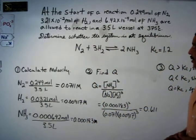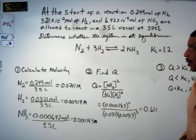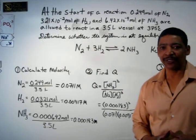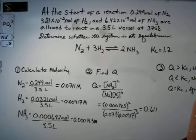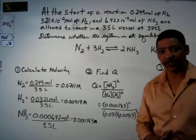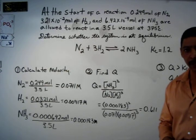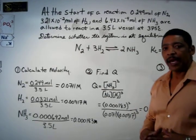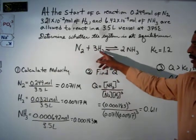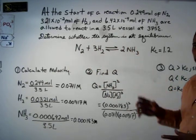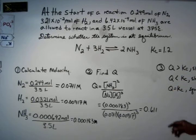At the start of a reaction, 0.249 mol of nitrogen gas and 3.21 times 10 to the minus 2 mol of hydrogen gas and 6.42 times 10 to the minus 4 mol of ammonia are allowed to react in a 3.5 liter vessel at a temperature of 375 degrees Celsius. You are asked to determine whether this system is at equilibrium. It is appropriate to write the proper equilibrium equation where nitrogen gas reacts with hydrogen gas to produce ammonia. For this reaction, the accepted value for Kc will be 1.2.